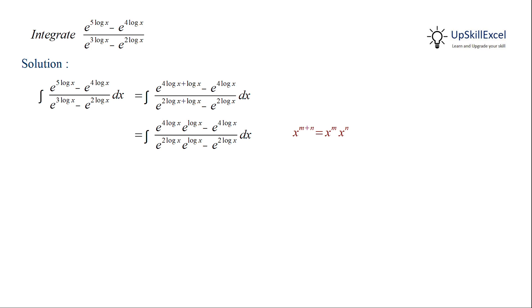Now in the numerator we can take e raised to 4 log x common, and in the denominator we can take e raised to 2 log x common, giving us e raised to 4 log x multiplied by e raised to log x minus 1 in the numerator, and e raised to 2 log x multiplied by e raised to log x minus 1 in the denominator.